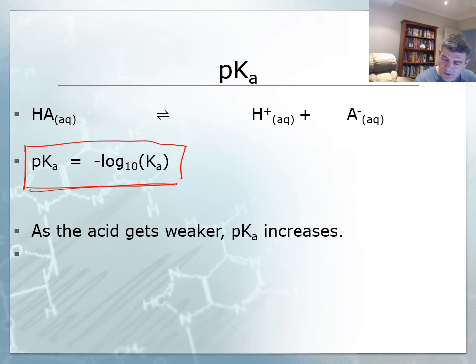So we know for example that pH of 1 is going to be a stronger acid solution than a pH of 2.